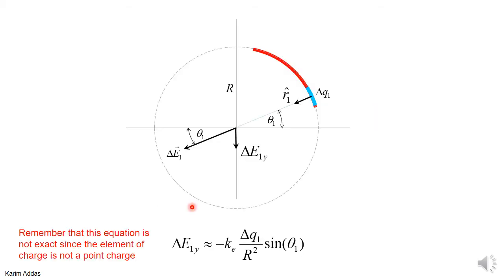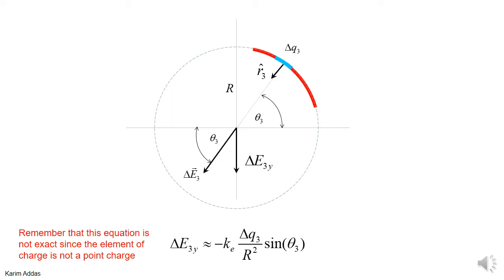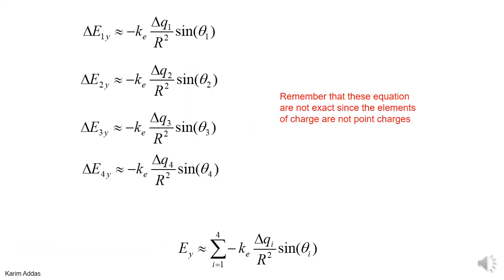Now let's do the same thing for the y-components. For delta E1y, if the angle is theta 1, the y-component is multiplied by sine theta, and there's also a minus sign. If the charge is positive and located in the first quadrant, it produces a negative y-component of electric field, so the negative sign is there for that purpose. We do the same for delta E2y, E3y, and E4y, then sum all y-components — written as a summation from 1 to 4. Again, these equations are only valid for point charges, so this is illustrative only.